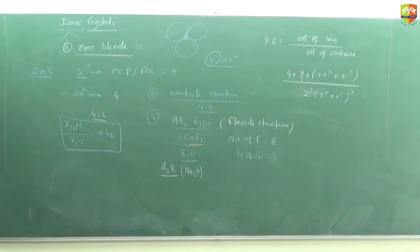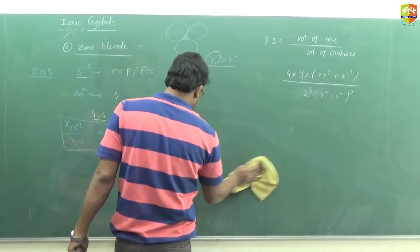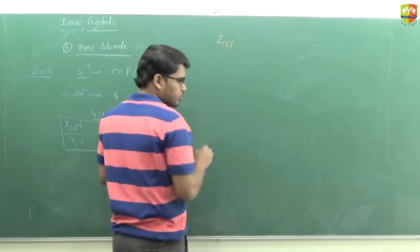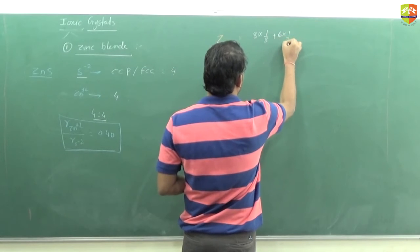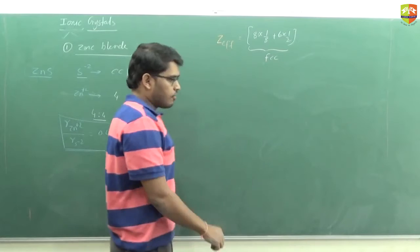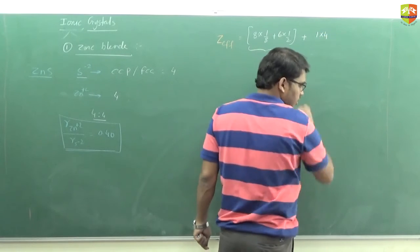Next, write down the structure of diamond. It has FCC structure, and 4 more atoms are present in the alternate tetrahedral voids. Can you tell me what is the Z effective for diamond? FCC contributes 4 atoms: 8 × (1/8) + 6 × (1/2) = 4. Plus 4 more atoms in alternate tetrahedral voids - what is their contribution?